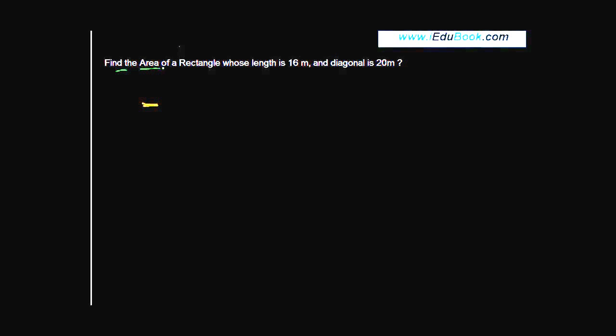Find the area of a rectangle whose length is 16 meters and diagonal is 20 meters. Let's first see how basically a rectangle looks like. Obviously these are straight lines, but because I am drawing by hand, these are a little tilted.